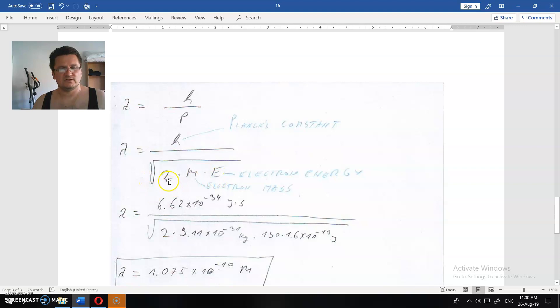This is 2 times mass of the electron, electron energy and so on. Now we rewrite everything that we have. This is the Planck constant. This should be written 6, but it doesn't matter.